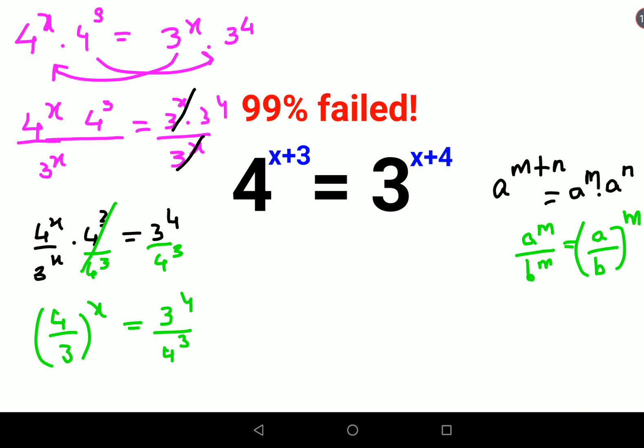But we can substitute the value of 3 raised to 4 which is 81 and 4 raised to 3 which is coming out to be 64. But after this we are literally stuck. We can't do much. So now in this case what we are left with is 4 upon 3 the whole raised to x equals 81 upon 64.